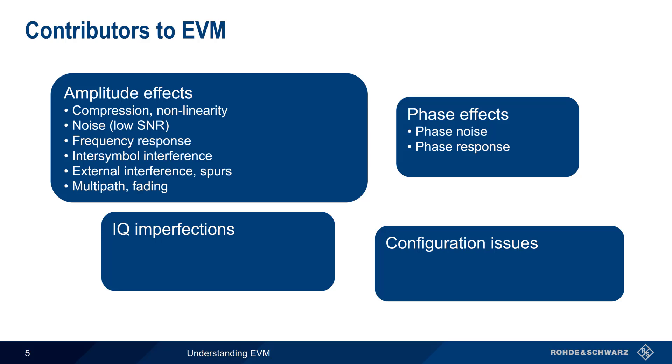Imperfections in an IQ modulator or demodulator, such as gain imbalance, quadrature offset, or carrier feed-through, can be significant contributors to EVM. And finally, some types of configuration issues can impact EVM, for example, having mismatched filters, or different symbol rates at the transmitter and receiver.